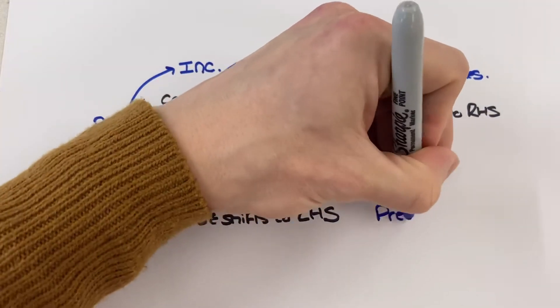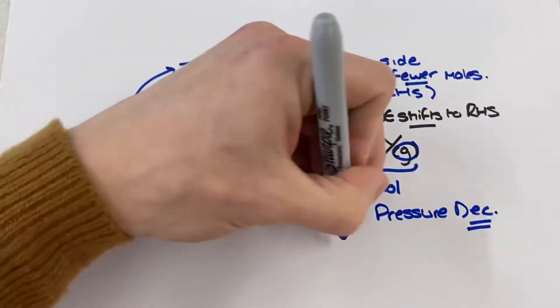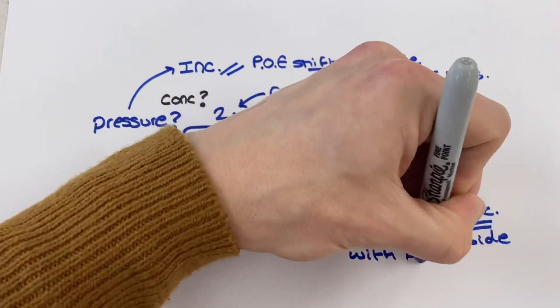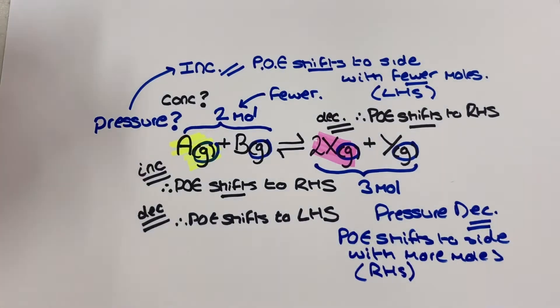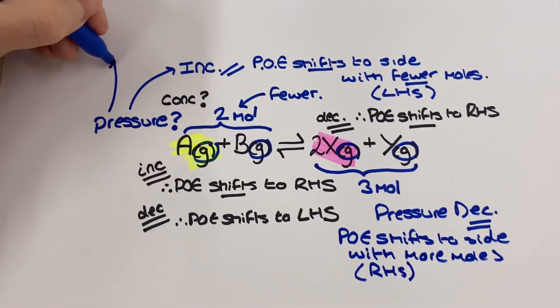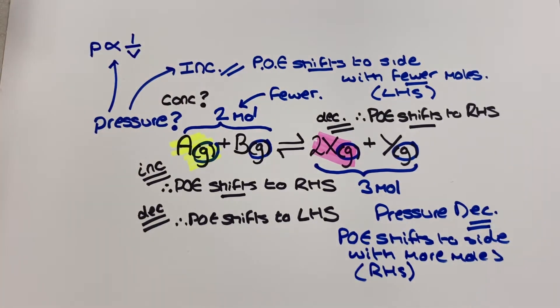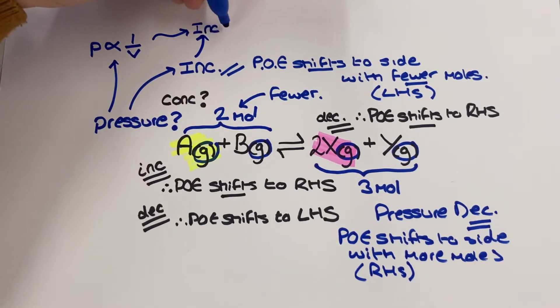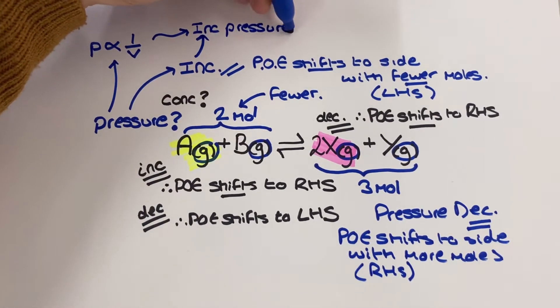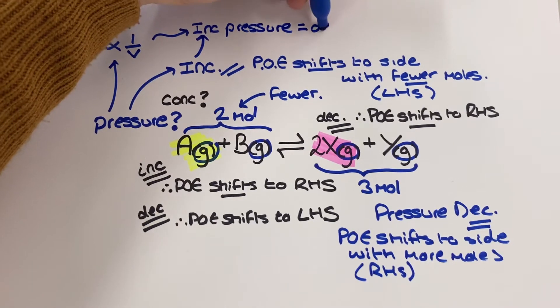Sometimes exam questions try and trick you by mentioning that the reaction vessel volume is changing instead. The ideal gas equation teaches us that pressure is inversely proportional to volume. This means that when one increases the other decreases so what we need to do is carefully look out for exam questions which describe an equilibrium vessel volume decreasing as it's really just a sneaky way to distract you from what is just really a change of increasing the pressure.